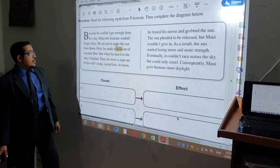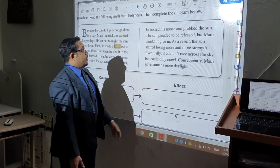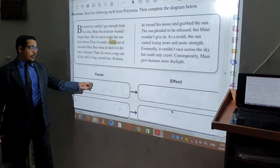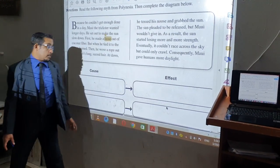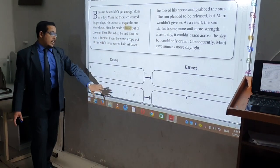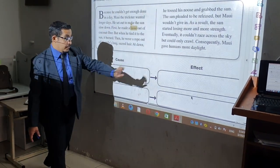In the question he said, read the following myth from Polynesia, then complete the diagram below. He asked the students to write the cause and effect. We have four sentences that we are required to get from the text and write them here as cause and effect.